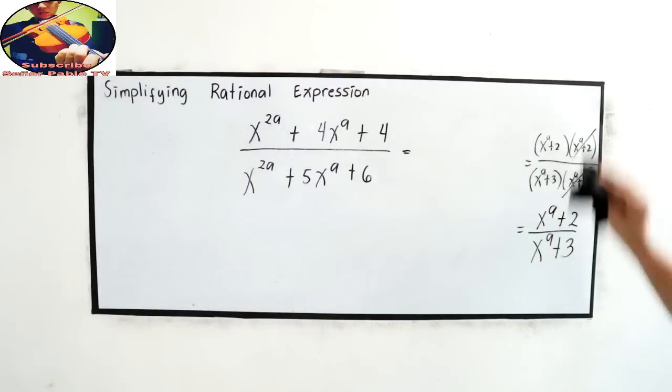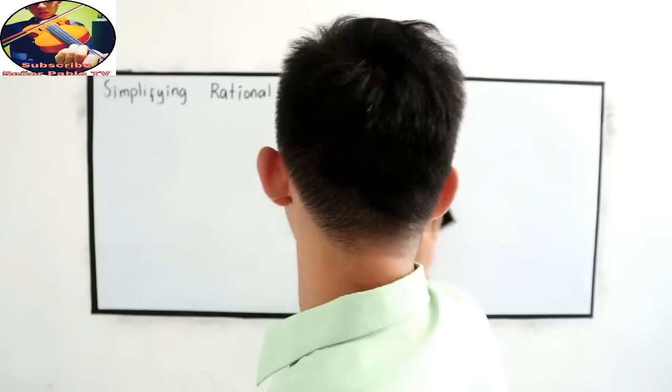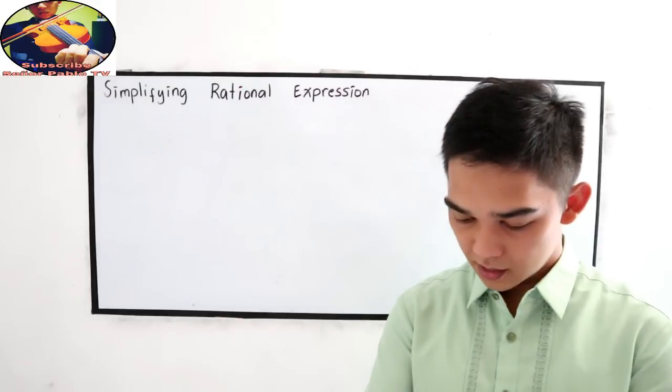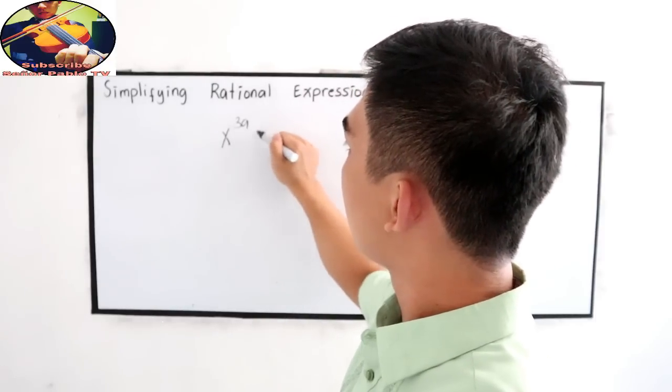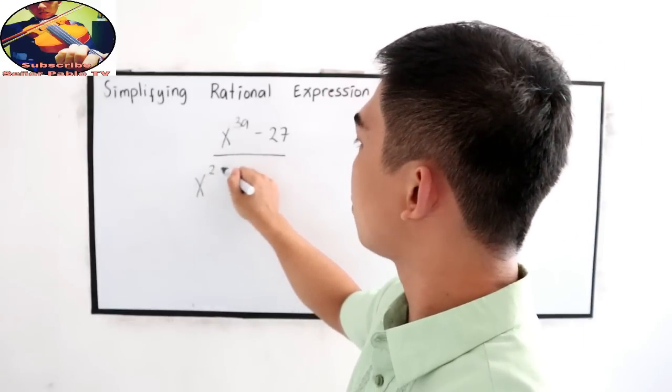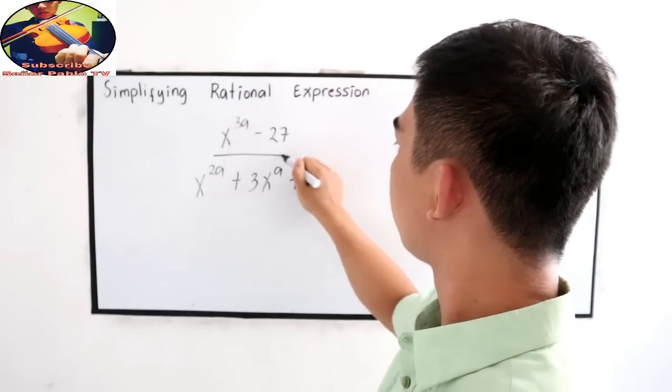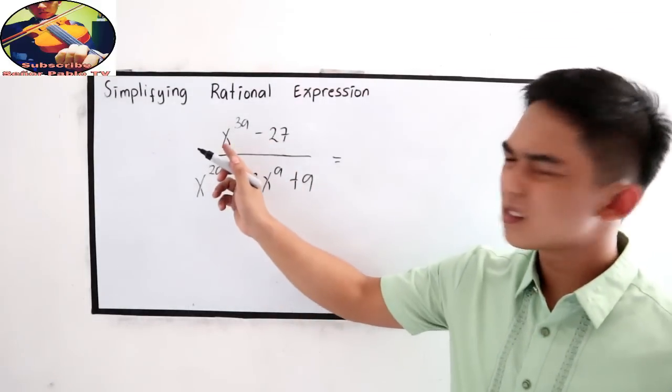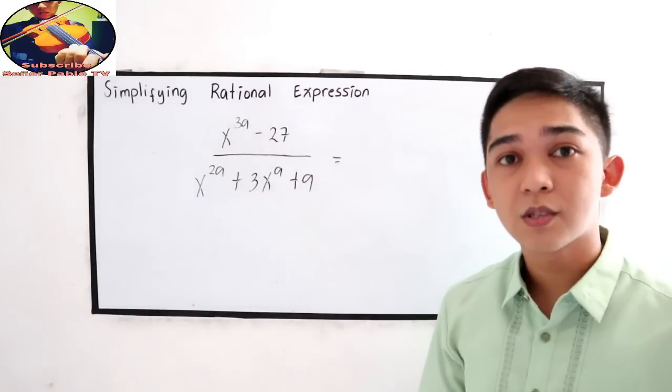Last example. If my explanation is too fast then you can pause then play. X raised to 3a minus 27 over x raised to 2a plus 3x raised to a plus 9. Again, we have a in our exponent but this is just the same as x cubed minus 27. Difference of two cubes.